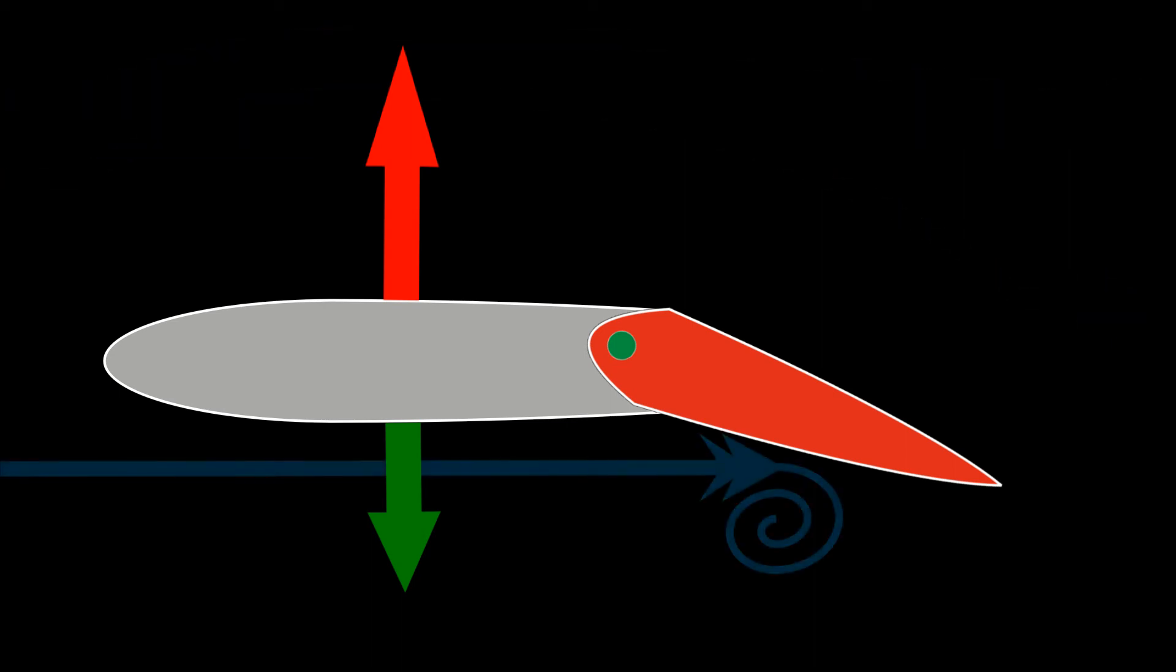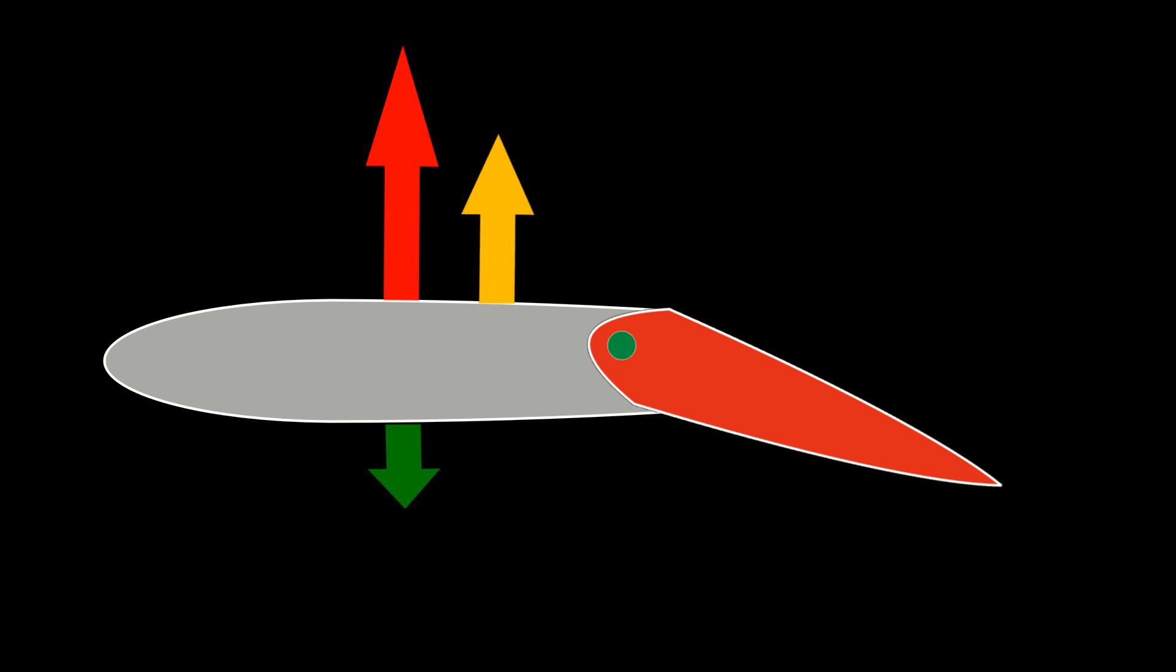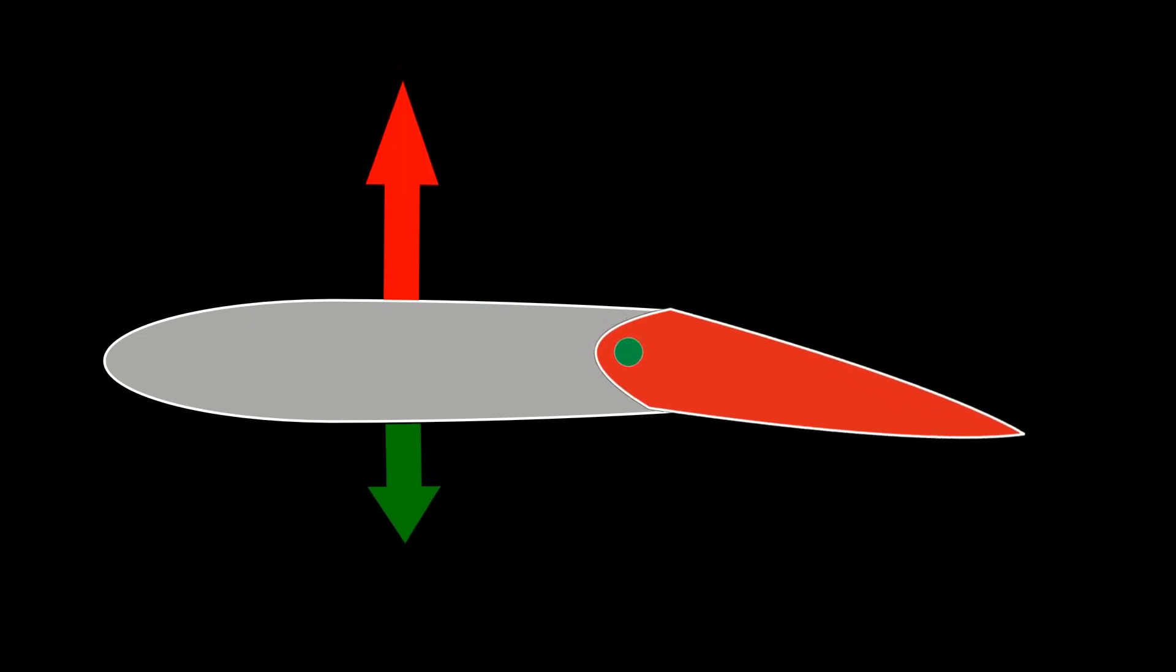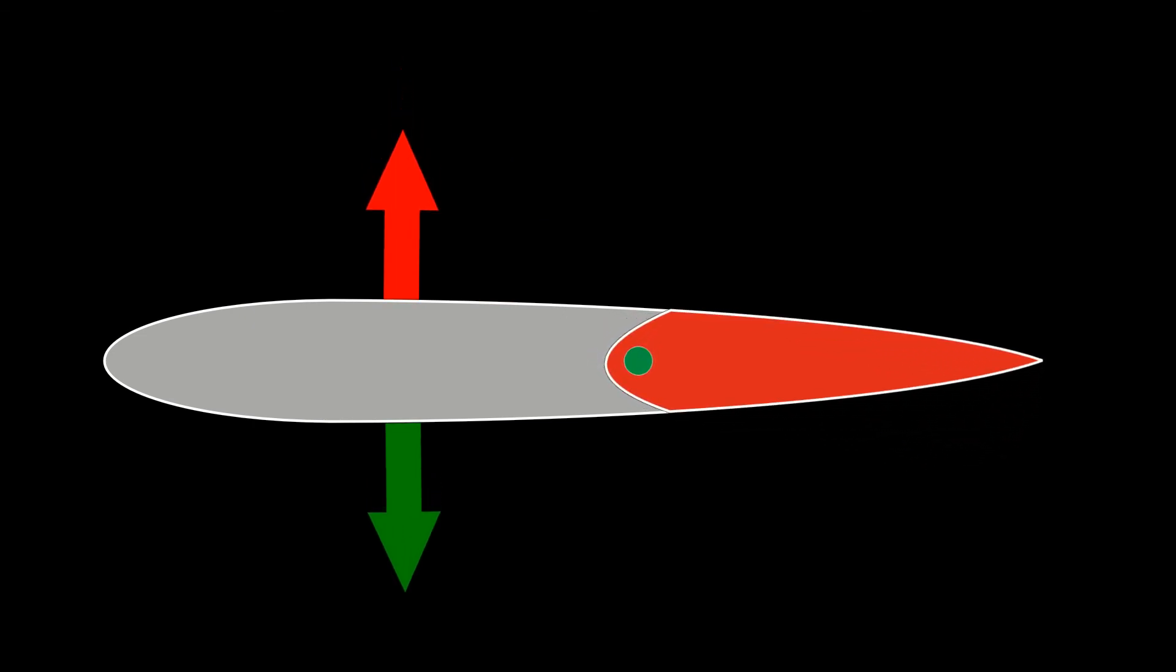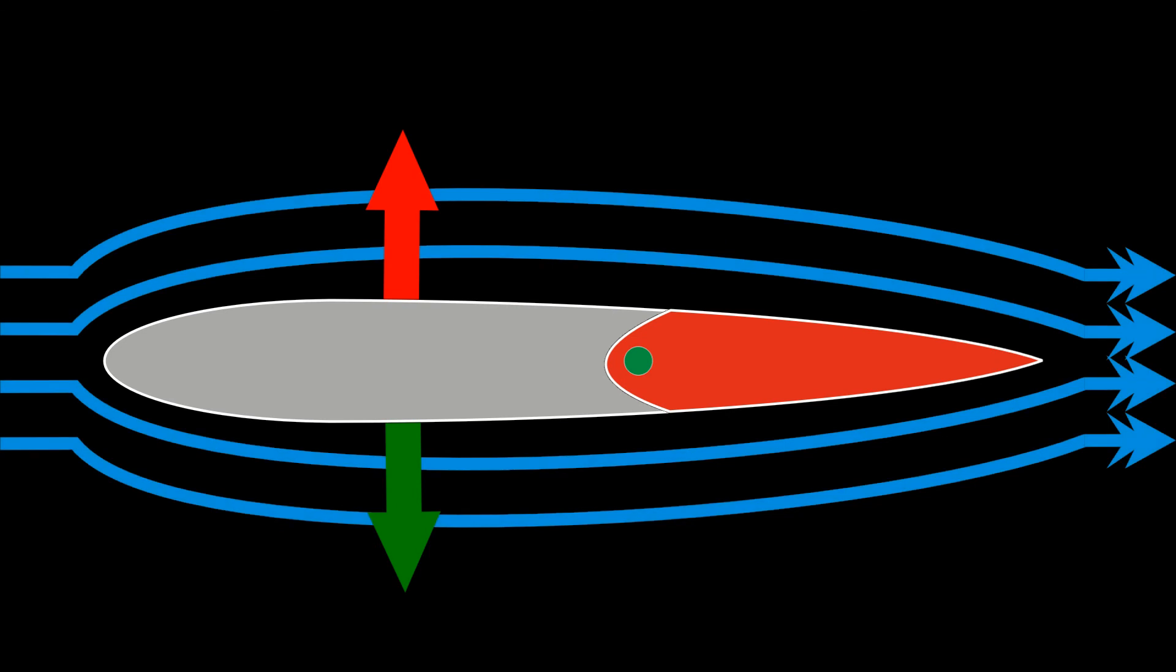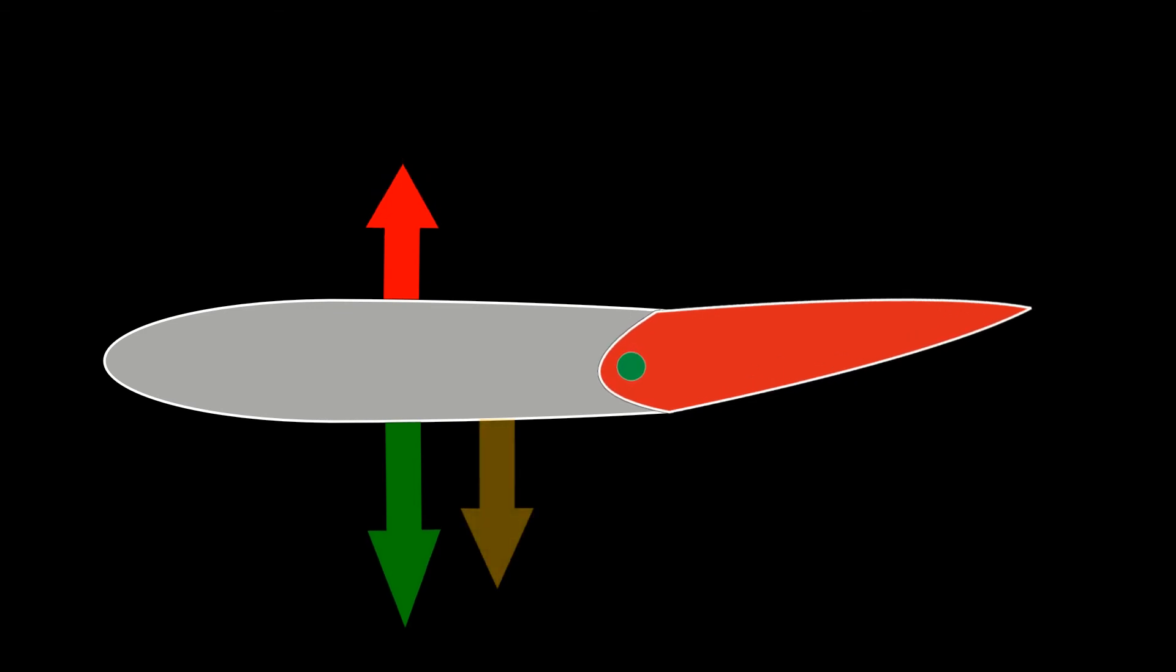Likewise, as previously described, the airflow on the lower surface becomes restricted by the control surface entering the airflow. This increases the air pressure underneath, which reduces the downwards pull on the aerofoil. The result is to give an overall upwards force. Obviously, if the control surfaces are centered again, the forces equalize, as the airflows are restored to normal. Of course, the reverse is true if the control surface is moved in the opposite direction.